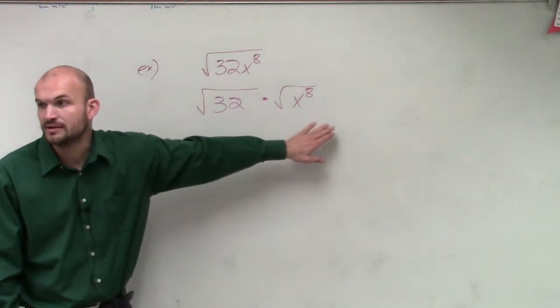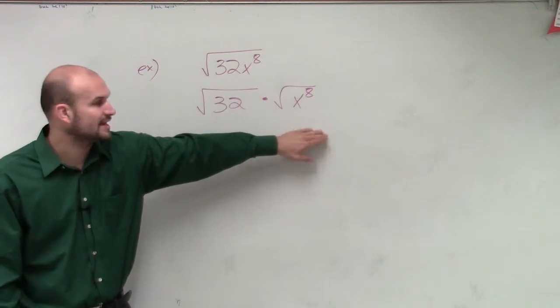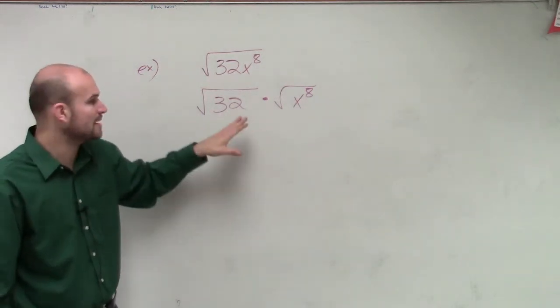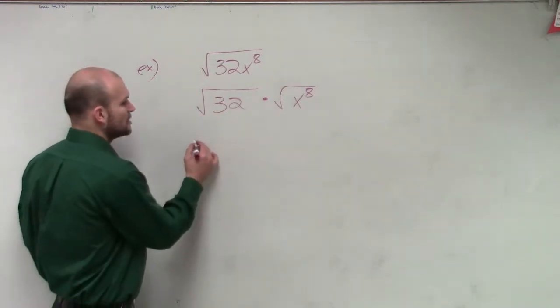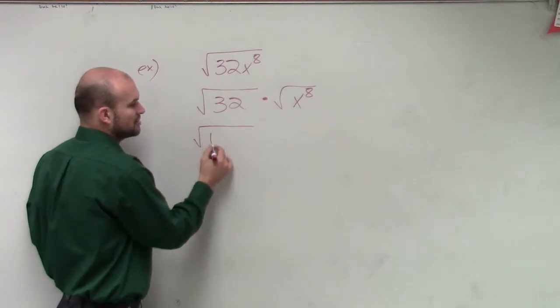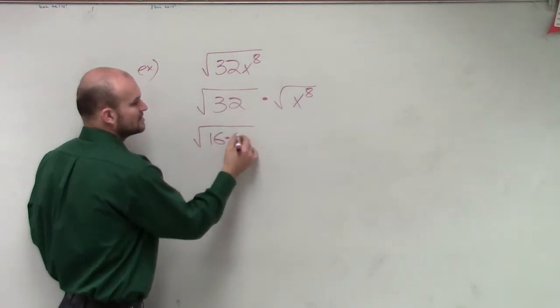We're going to want to break this up into a term squared. And then here, we're going to have to break this up to a term squared. And remember, when simplifying radicals, what I always said was, always try to break this up even further into your largest square number, which could be 16 times 2.